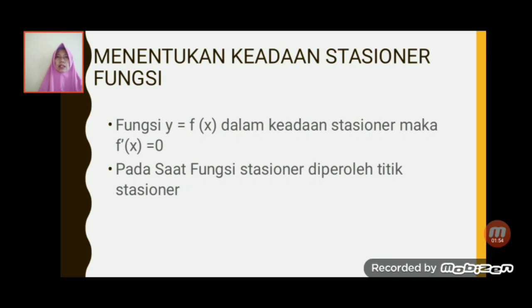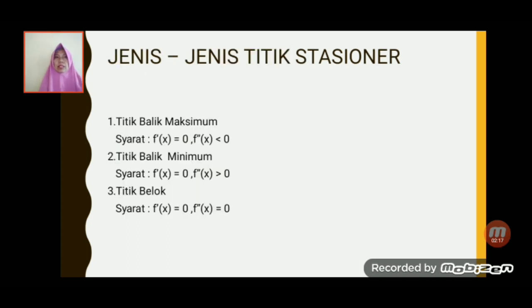Kalau kemarin kalian telah belajar tentang turunan fungsi aljabar minggu yang lalu, sekarang kita akan lanjutkan mengenai menentukan keadaan stasioner suatu fungsi. Di sini, fungsi y sama dengan f(x) dalam keadaan stasioner, maka turunan pertamanya harus sama dengan 0. Pada saat fungsi stasioner diperoleh titik stasioner, dengan jenis-jenis titik stasioner sebagai berikut.